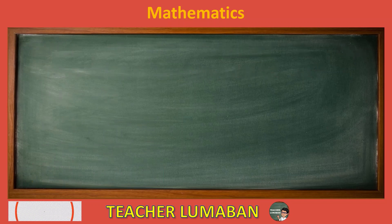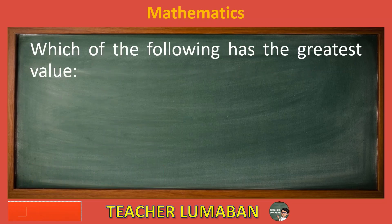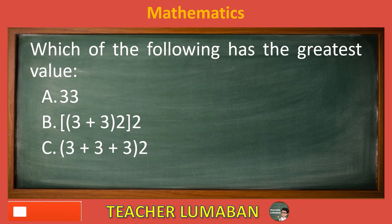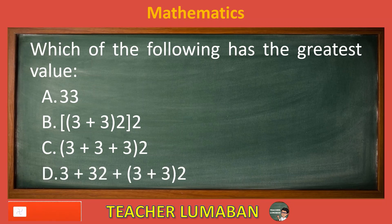Which of the following has the greatest value? Letter A: 3³. Letter B: (3 plus 3) by 2 by 2. Letter C: (3 plus 3) by 2. Letter D: (3 plus 3²) plus 3 by 3 by 2.